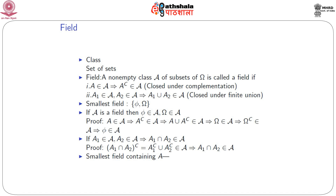Then we define a field. A field is a non-empty class, denoted as script A, of subsets of omega, the universal set. We call this a field if it satisfies two conditions. The first condition is closed under complementation — if A belongs to script A, then A complement also belongs to script A.